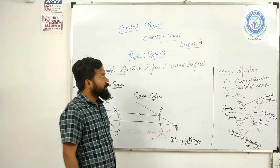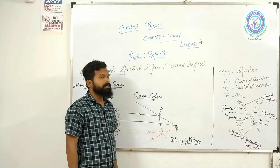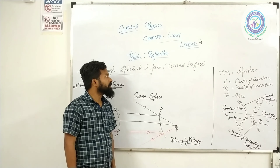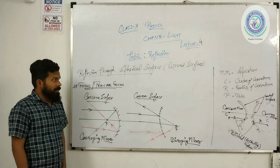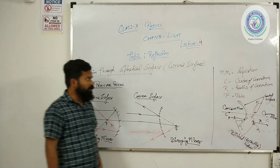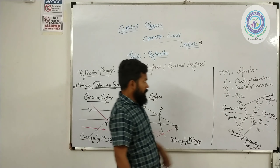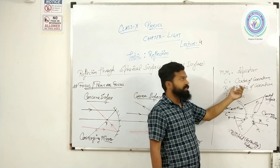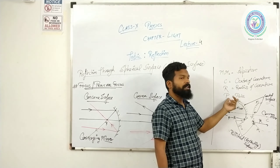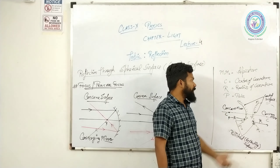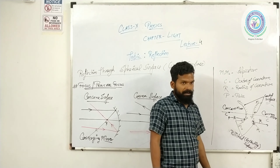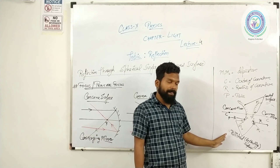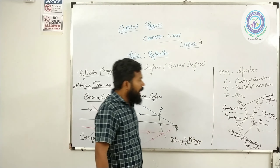Hello everyone. Now we are going to start the next part of our topic — Reflection. In last classes we have studied about aperture, center of curvature, radius of curvature, pole, and principal axis. In the last class हमने इन सब को देख रखा हुआ है, अब हमें उसके आगे देखना है।